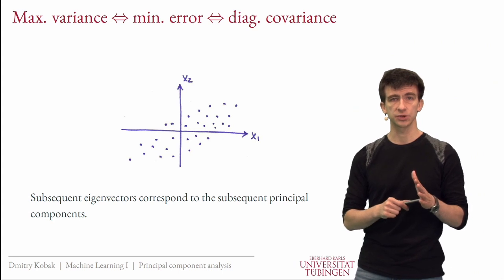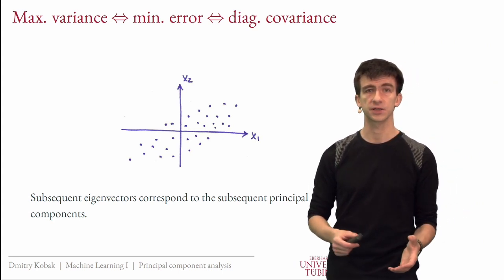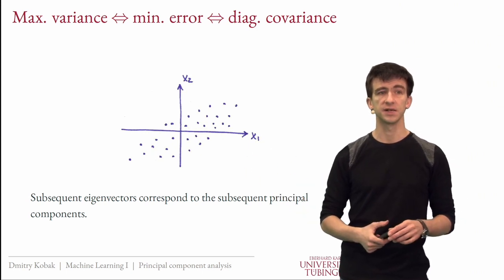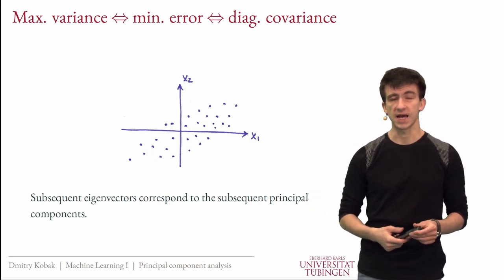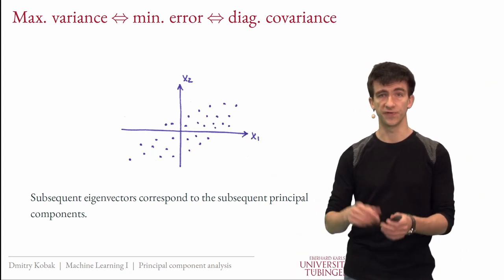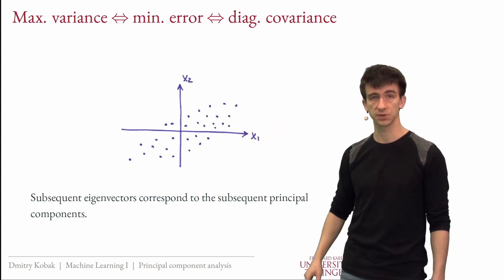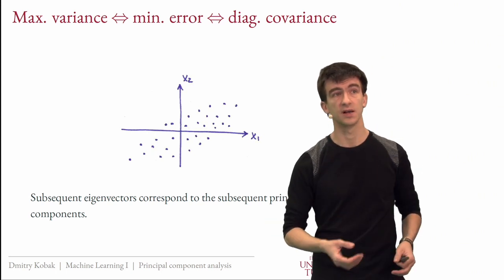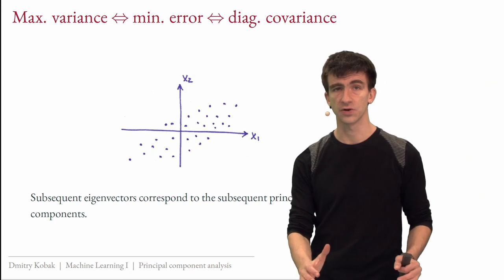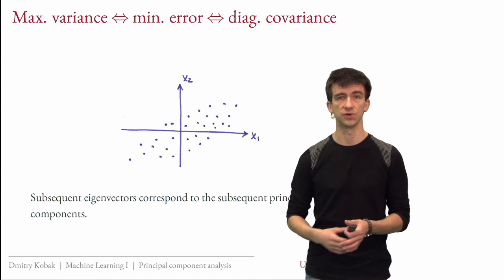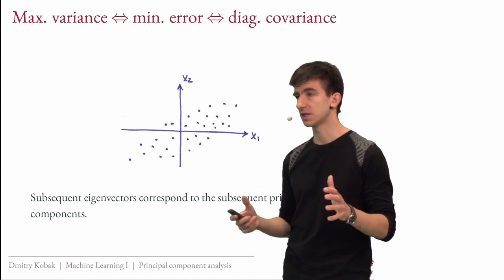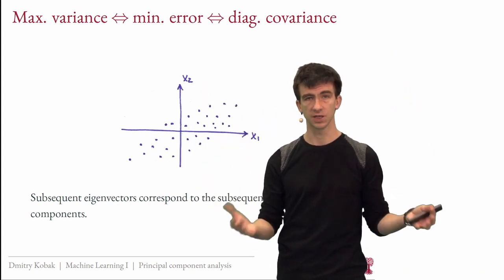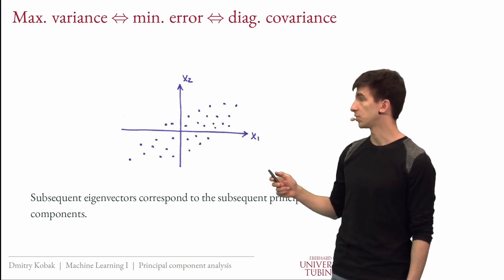I was talking about choosing the first axis, but it works greedily for subsequent components too. The second principal component is the eigenvector with the second largest eigenvalue — it has maximum variance under the constraint of being orthogonal to the first. So once you do the eigen decomposition of the covariance matrix, all principal axes are given by the eigenvectors. In a sense, PCA is just a rotation of the data such that all correlations become zero.